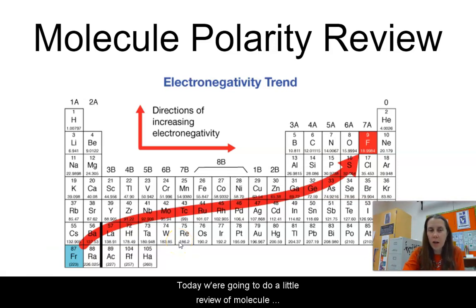Today we're just going to do a little review of molecule polarity. I wanted to start with a review of electronegativity, and remember that electronegativity is how much, or how likely, an element is to pull the electrons toward itself when it's in a covalent bond. So the most electronegative atom on the periodic table is fluorine.